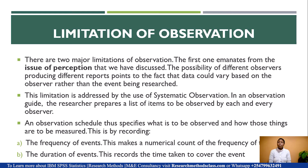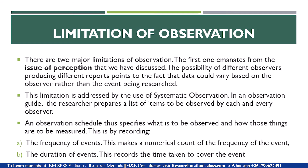Perception is actually one of the major limitations of observation. The possibility of different observers producing different reports points to the fact that data could vary based on the observer rather than the event being researched. This limitation can be addressed by use of systematic observation, where the researcher prepares a list of items to be observed by each and every observer, and also by stating how those things are to be measured — for example, recording the frequency of events as a numerical count, or the duration of events, which records the time taken to cover the event.